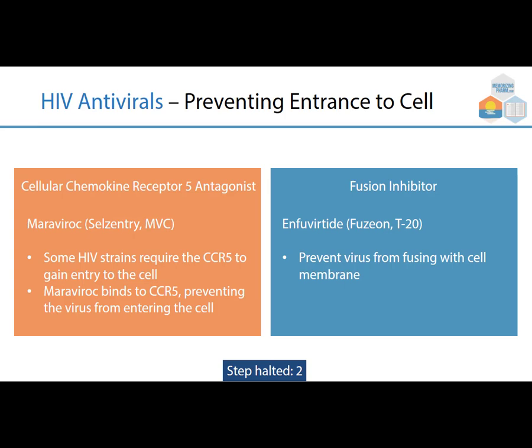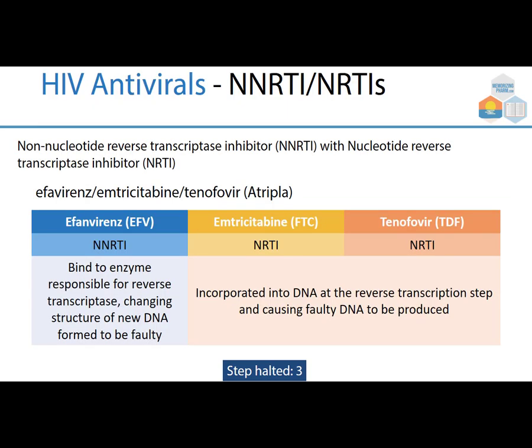The NNRTIs and NRTIs — non-nucleoside and nucleoside reverse transcriptase inhibitors — include efavirenz, emtricitabine, and tenofovir, which together form Atripla. Efavirenz is an NNRTI that binds to the enzyme responsible for reverse transcriptase and changes the structure of the new DNA formed so it's faulty and doesn't work. Emtricitabine and tenofovir are both NRTIs that are incorporated into DNA at the reverse transcription step, also causing faulty DNA to be produced.